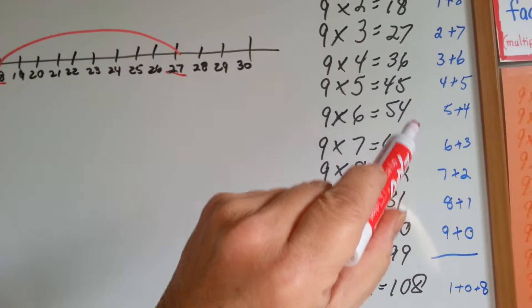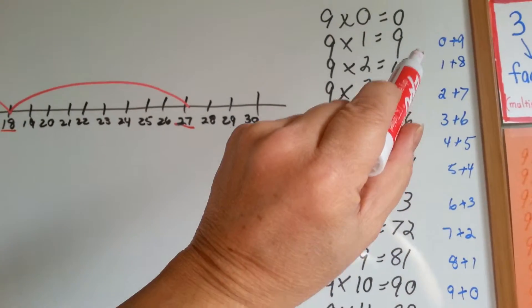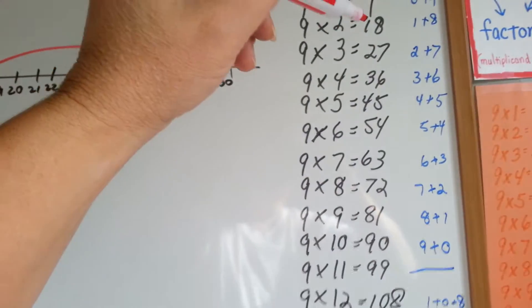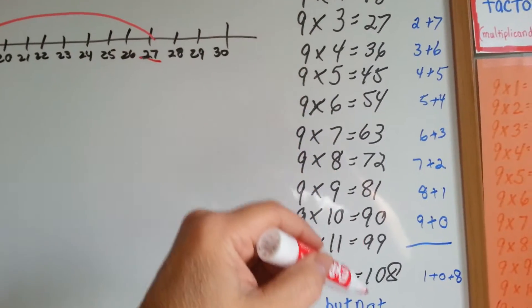And then, it goes backwards. 0, 1, 2, 3, 4, 5, 6, 7, 8, 9 on the ones side. So, you can go all the way up.